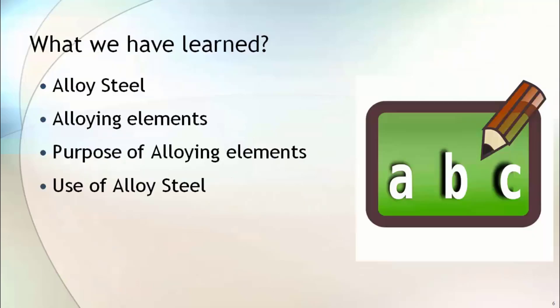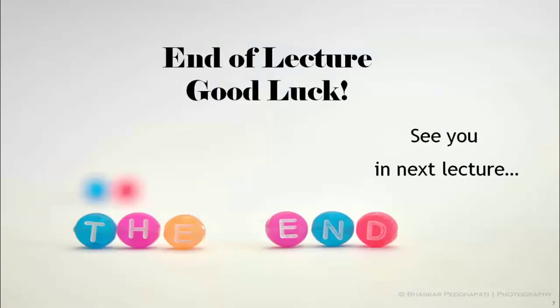Let's summarize what you have learned in this lecture. You learned about what alloy steel is. You also learned about different alloying elements commonly used to improve the properties of carbon steel, the purpose of adding alloying elements, and the use of alloy steel. We also saw some of the common grades used in piping. See you in the next lecture.